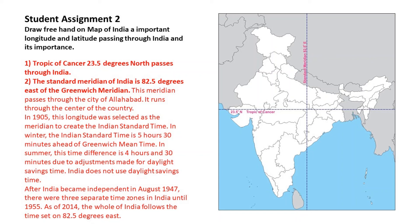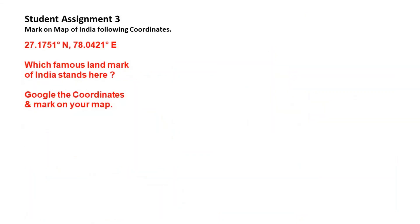Activity: Mark on the map of India the coordinates 27.1751 degrees north and 78.0421 degrees east. Which famous landmark of India stands here? Quickly Google the coordinates and mark it on your map. Yes — the Taj Mahal stands at this location.